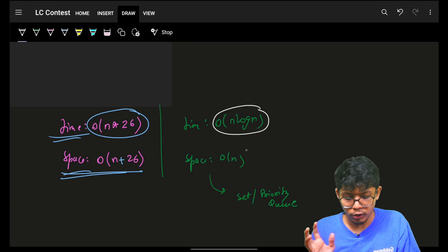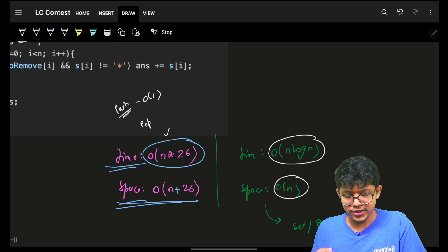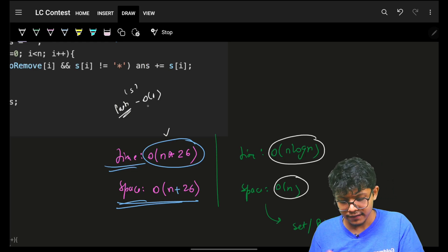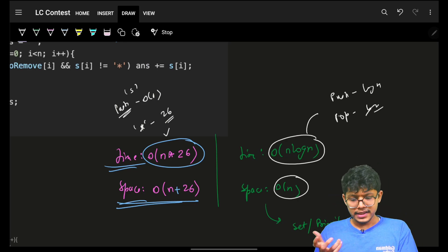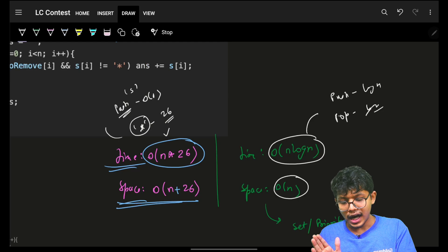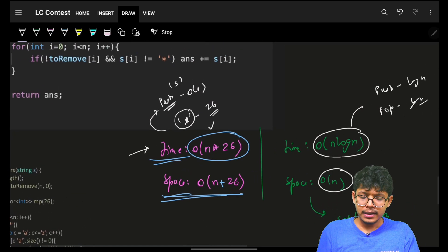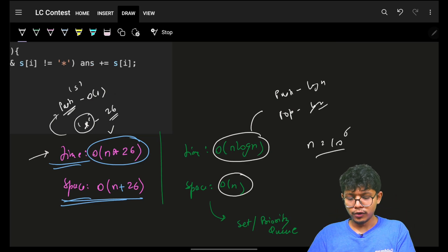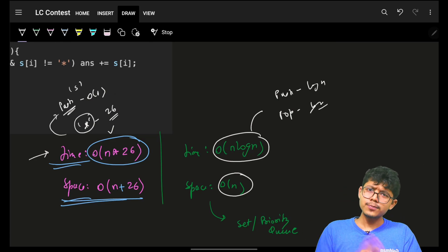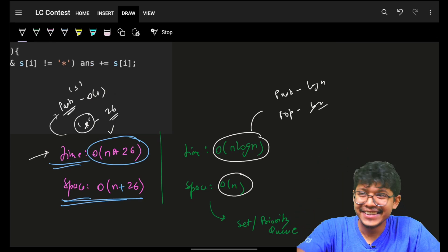Comparing the two: the heap approach uses O(n log n) time with log n ≈ 20 for n = 1e5, while the hashmap approach uses O(n × 26). Both push and pop operations in the heap are O(log n), versus O(1) push and O(26) pop for the hashmap. Both approaches work. More or less they're the same — both will work for you. Cool, bye bye, take care, be good.